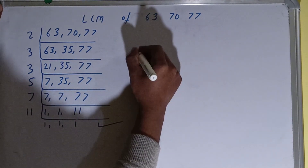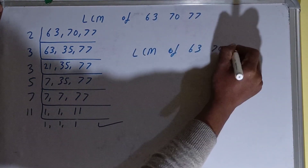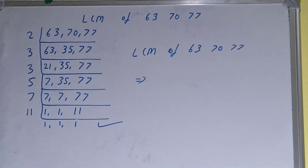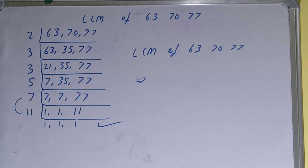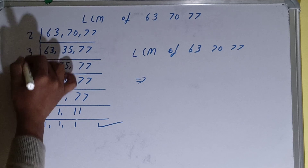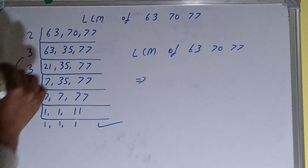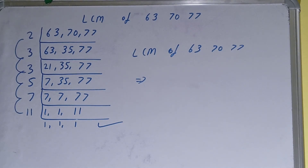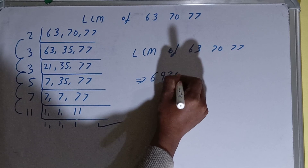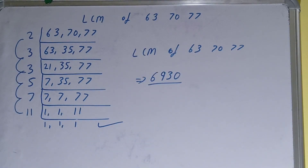Now we do one last thing: the LCM of 63, 70, and 77 equals the product of all the divisors on the left-hand side. If you have a calculator, always use it, but if not, double check your answer. 11 × 7 = 77, 77 × 5 = 385, 385 × 3 = 1155, 1155 × 3 = 3465, 3465 × 2 = 6930. So the LCM is 6930.